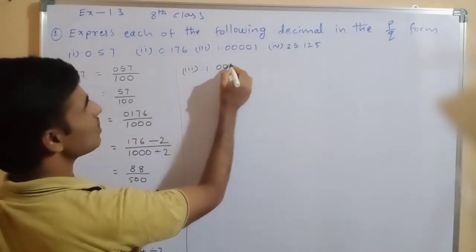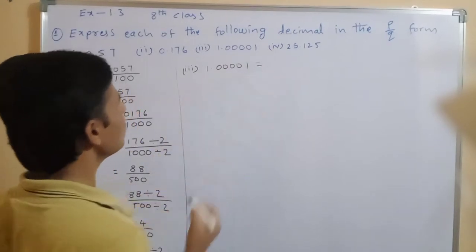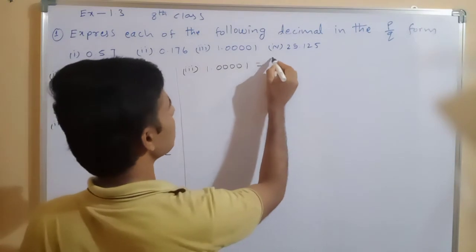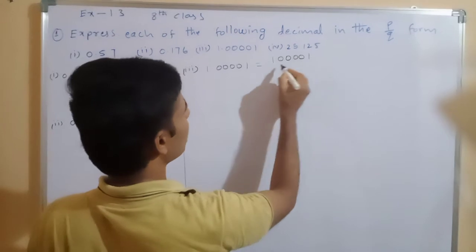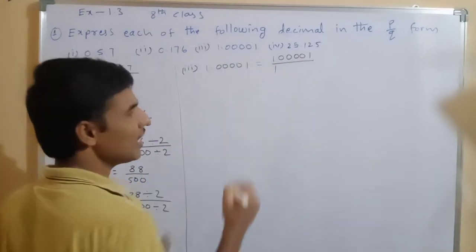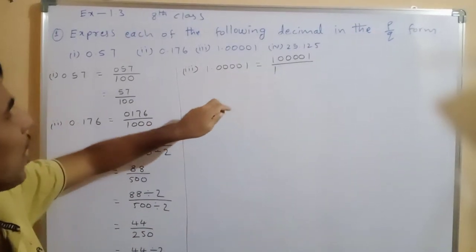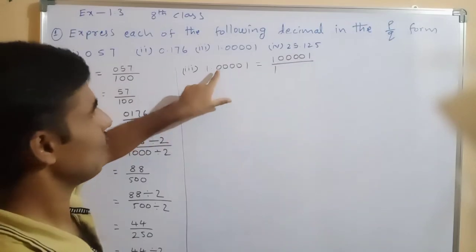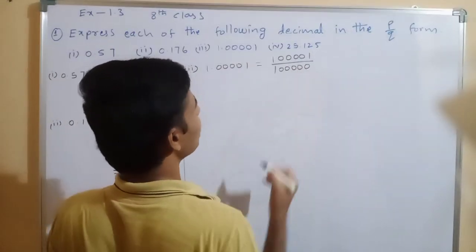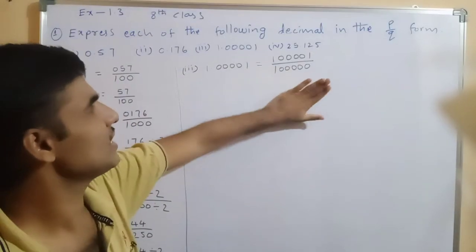Third problem: 1.00001. Terminate the point — we get 100001 divided by, before the point write 1, after the point there are 5 digits so write 5 zeros: 100000. Both 100001 and 100000 are not further reducible, so the answer is 100001 by 100000.